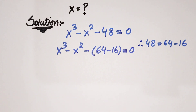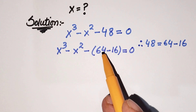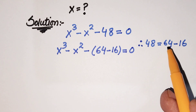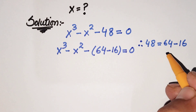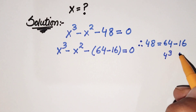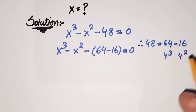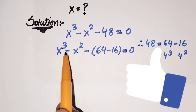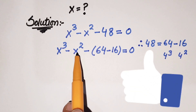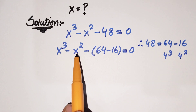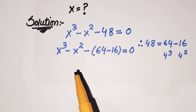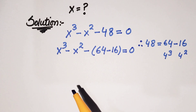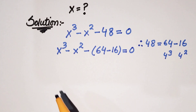The reason we use 64 minus 16 is that 64 is actually 4 cubed and 16 is 4 squared. So we can align these with x cubed and x squared and then make groups, which makes it very easy to solve for x.